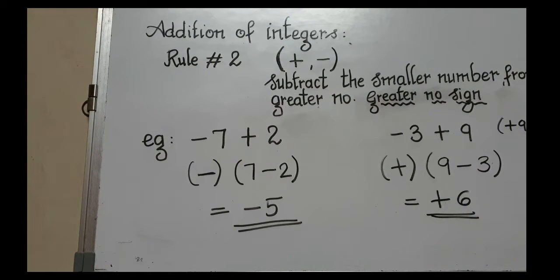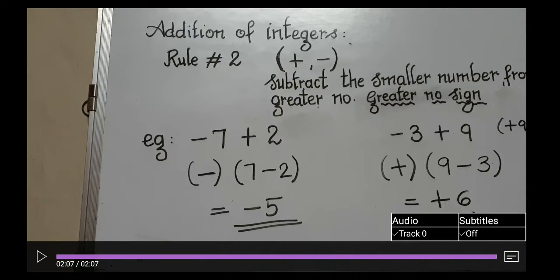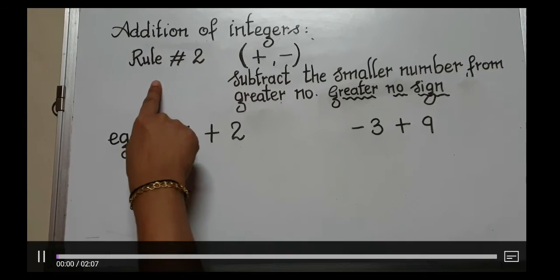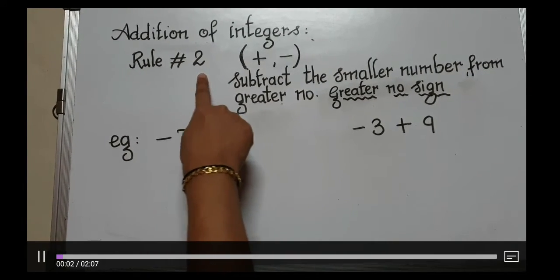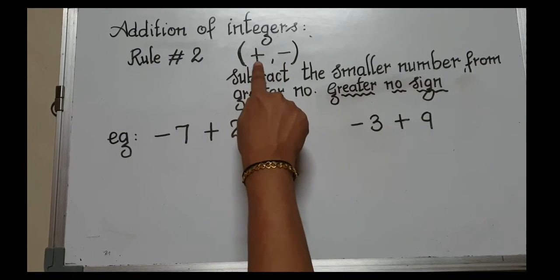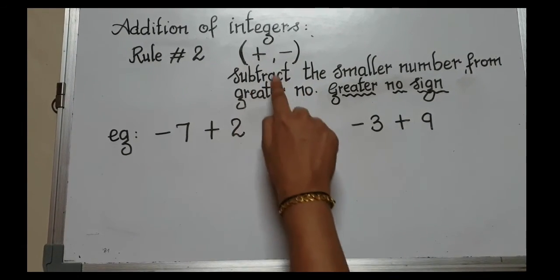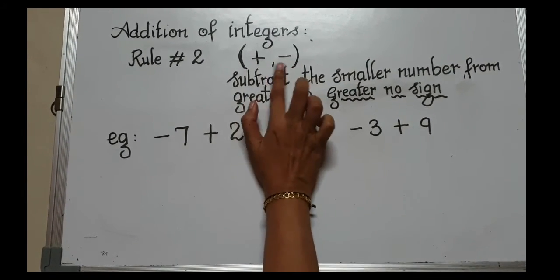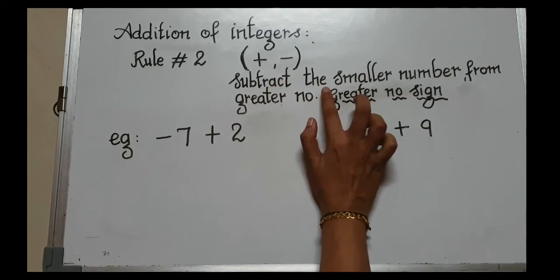Remember rule number two: when you have plus and minus, subtract the smaller number from the greater number and put the greater number's sign.